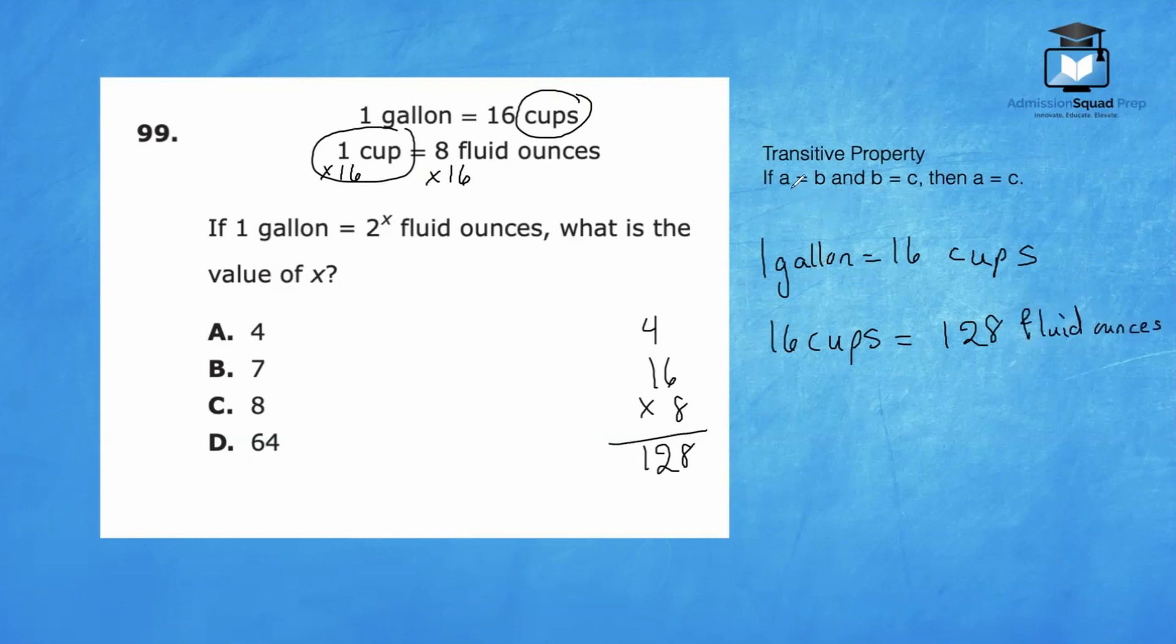So 16 cups equals 128 fluid ounces. According to the transitive property, if a equals b and b equals c, then we can get rid of the middleman and let a equal to c. So since one gallon equals 16 cups and 16 cups equals 128 fluid ounces, we know that one gallon equals 128 fluid ounces.